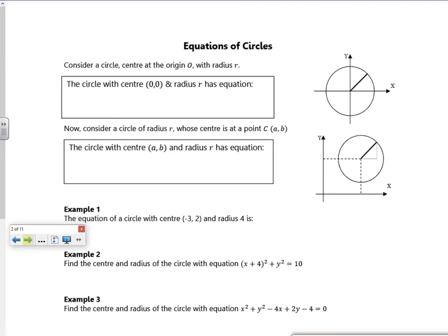Right, so it says consider a circle centered at the origin with radius r. If I've got a coordinate point here which is x comma y, I can make a little right angle triangle. It's x across and it's y up and it's got a radius r. If I use Pythagoras then x squared plus y squared is r squared. So that's for the triangle there. I've just used Pythagoras.